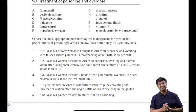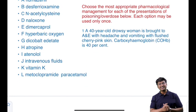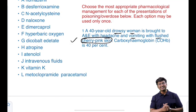A 40-year-old drowsy woman is brought to accident and emergency with headache, vomiting, and flushed cherry-pink skin. Carboxyhemoglobin is 40%. This is carbon monoxide poisoning. The treatment of choice is hyperbaric oxygen.